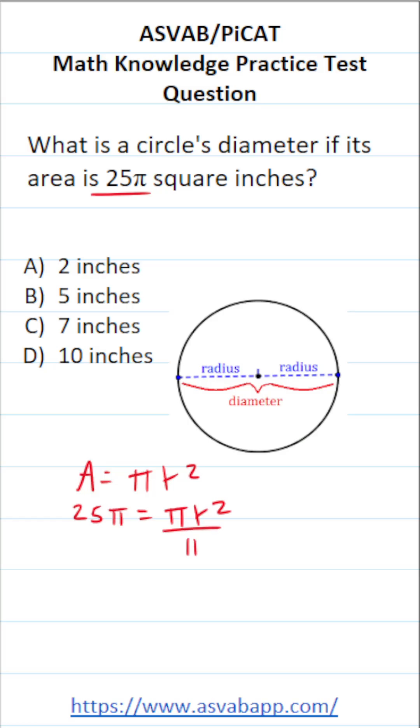To get started I'm going to divide both sides of this equation by π. In doing so this crosses out leaving me with r² over here. This crosses out as well leaving me with 25 over here.